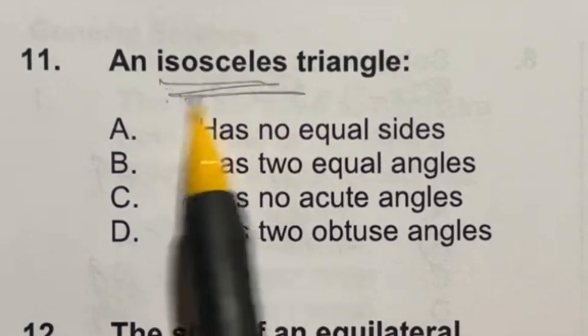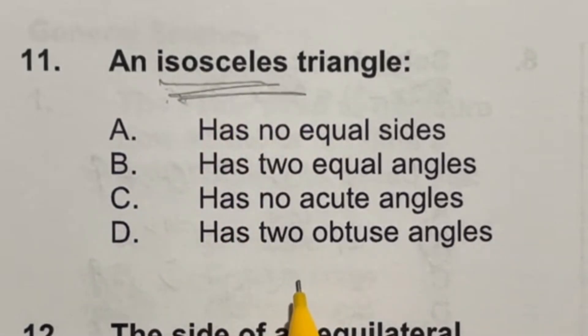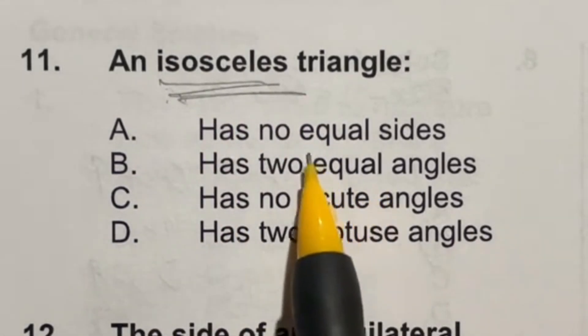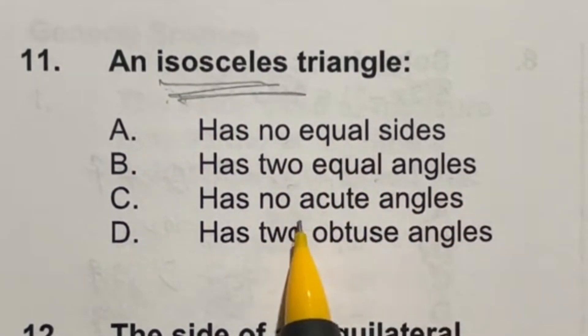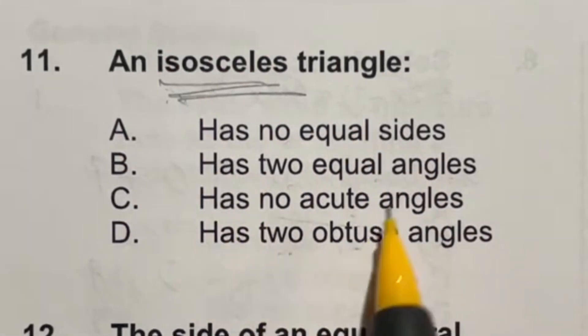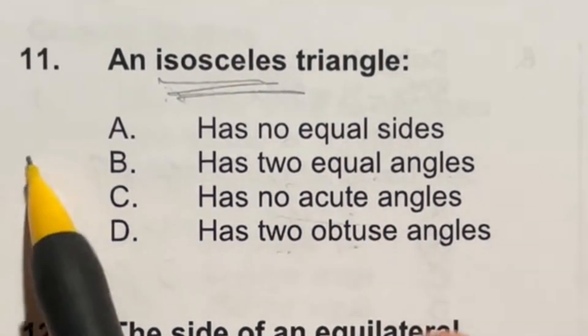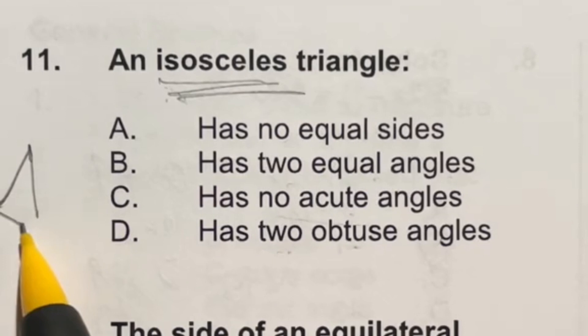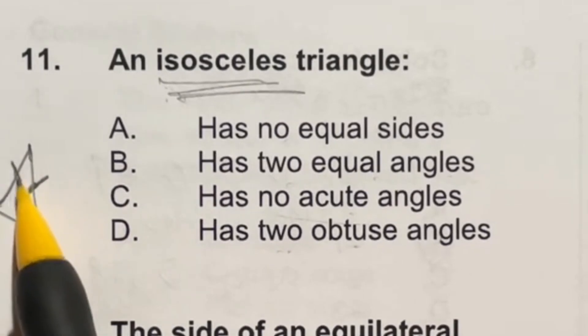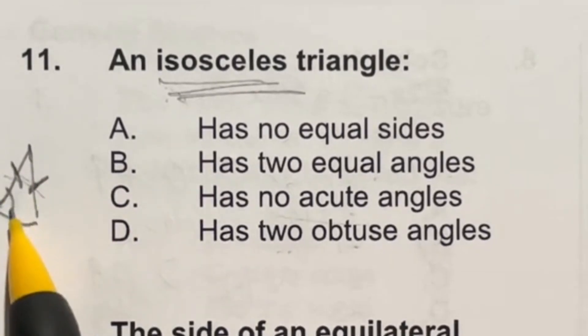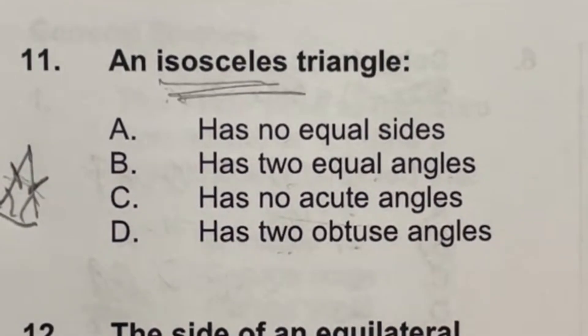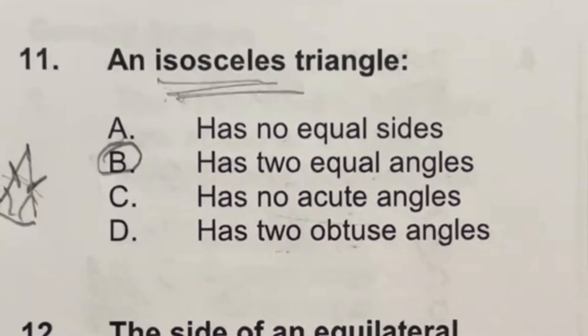So in this case, we're looking for one that has two equal sides. When we're looking here, it says no equal sides, two equal angles, no acute angles, and two obtuse angles. So none of those say two equal sides. But because we have a triangle that has two equal sides, something states that because these two side lengths are the same, it will actually make these two angles the same as well, meaning that B is actually also true.